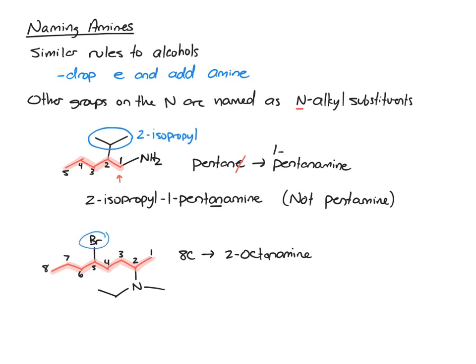Now, our substituents. We have a 5-bromo. We have a 5-bromo. But, then on the nitrogen, we have a methyl group. So, we'll call that N-methyl. And, we have an ethyl group. That's N-ethyl.